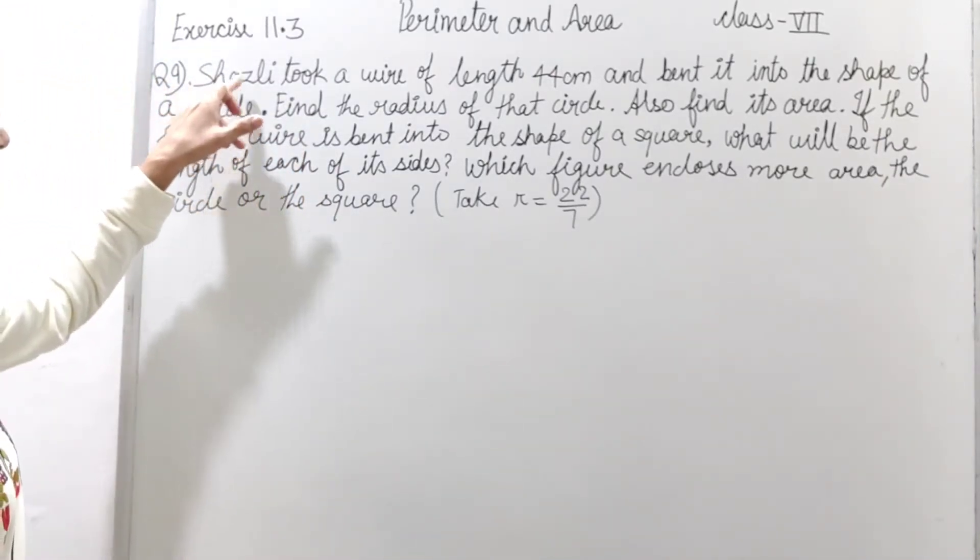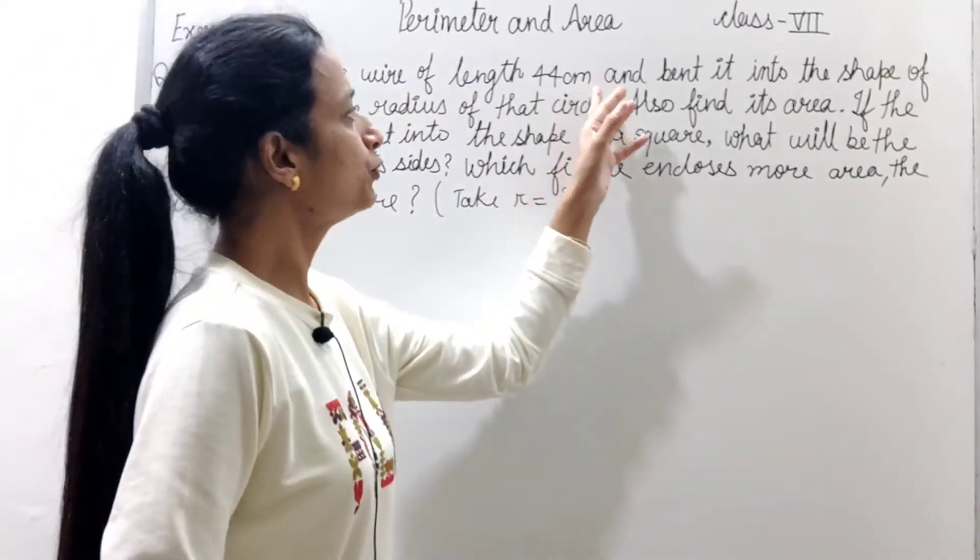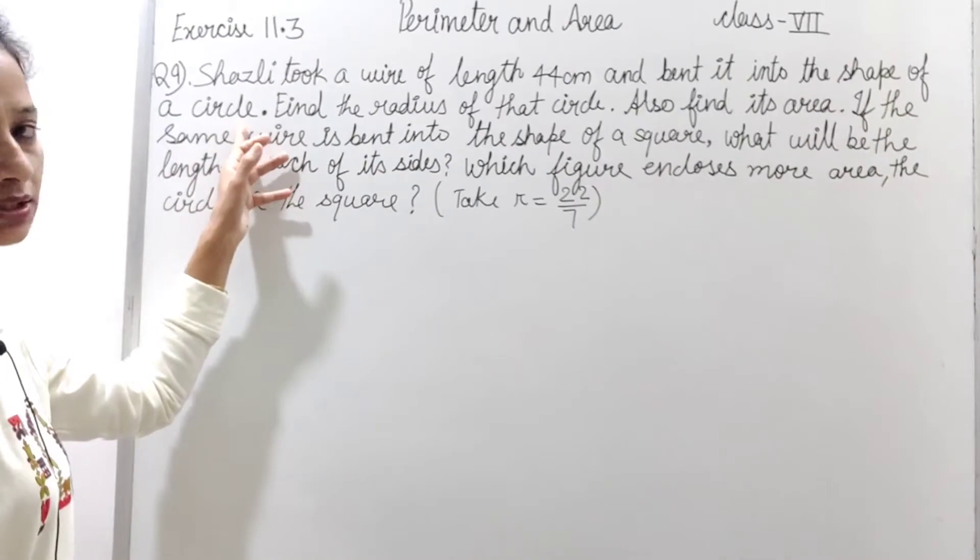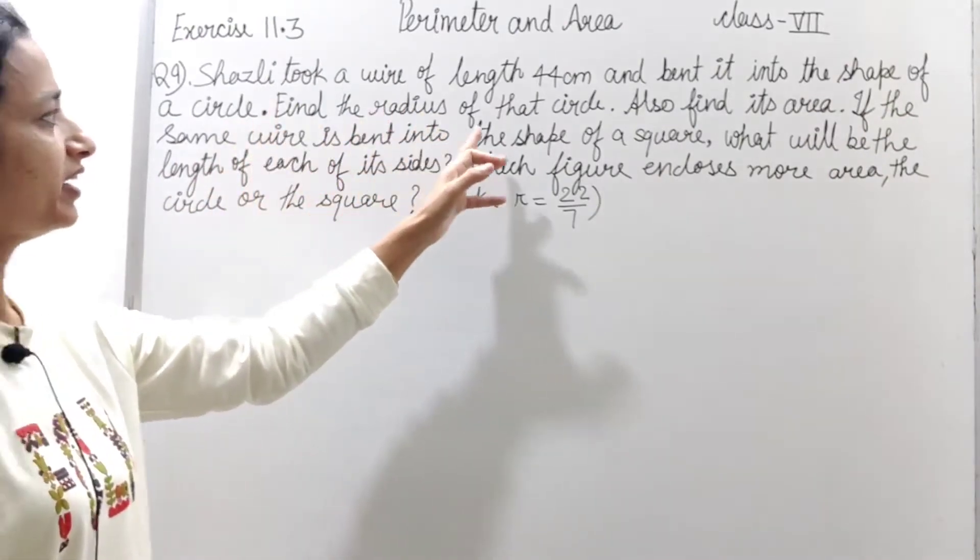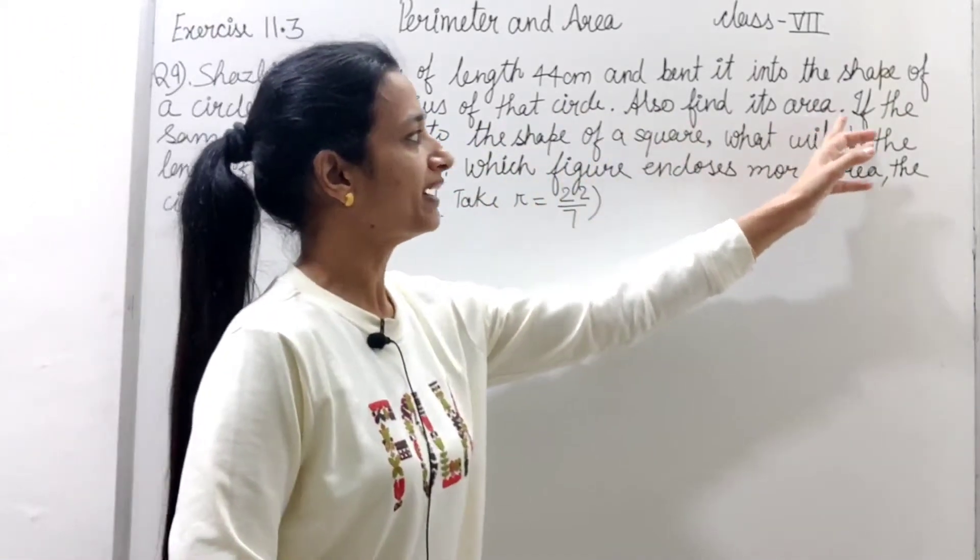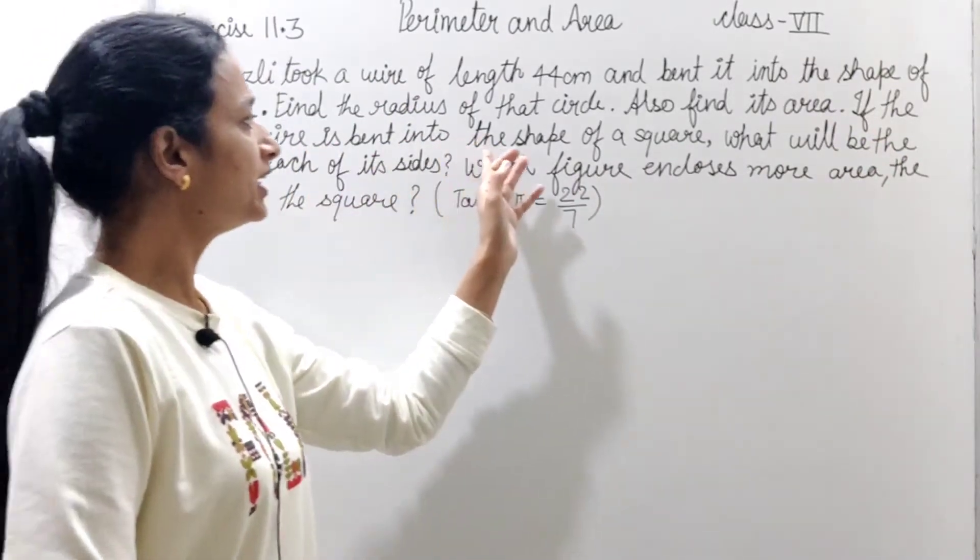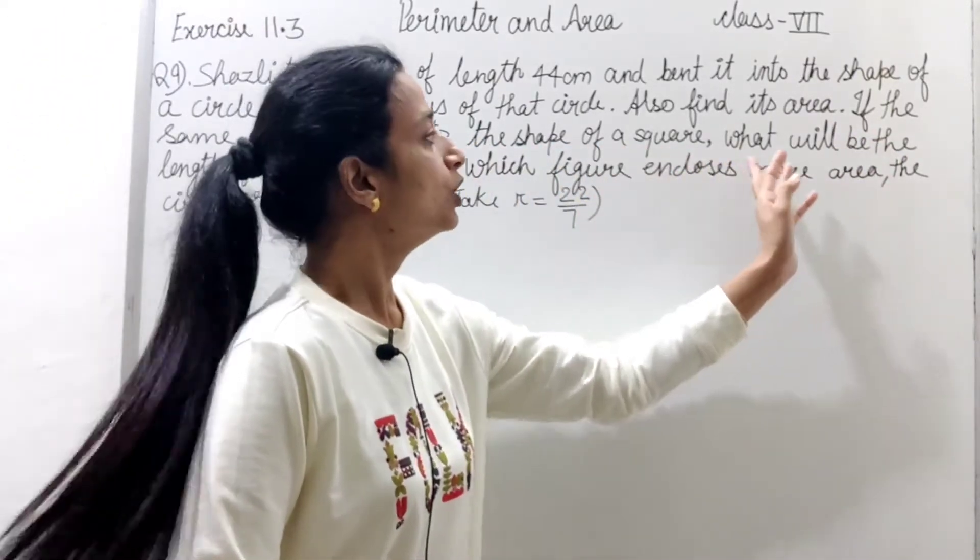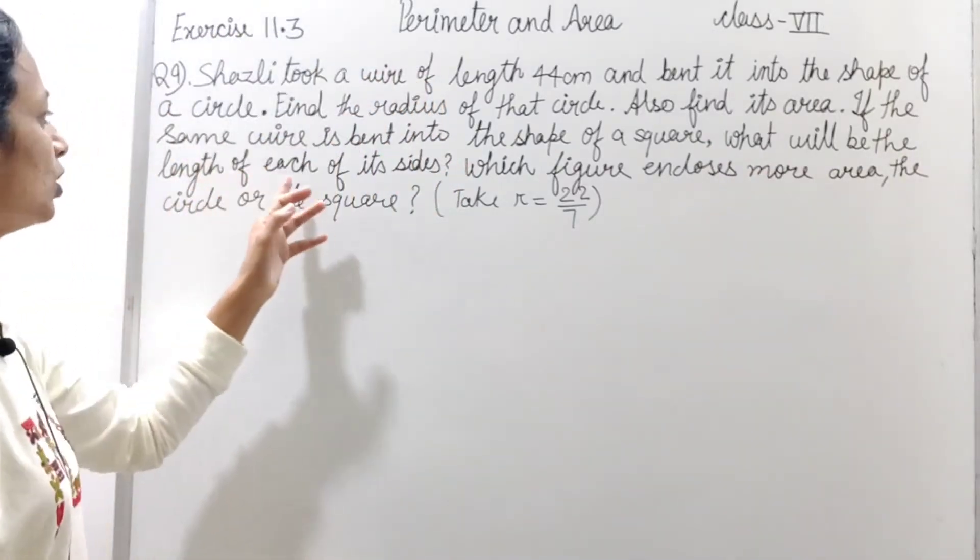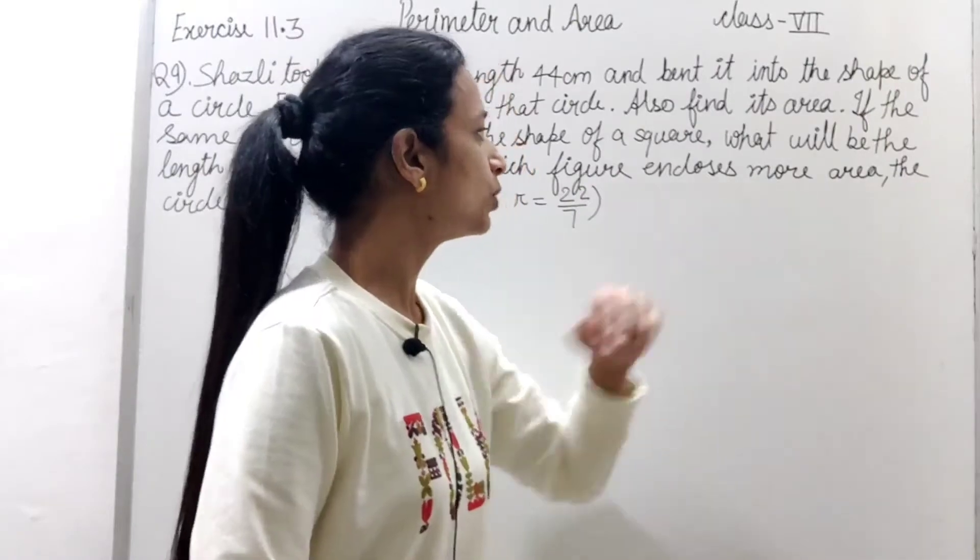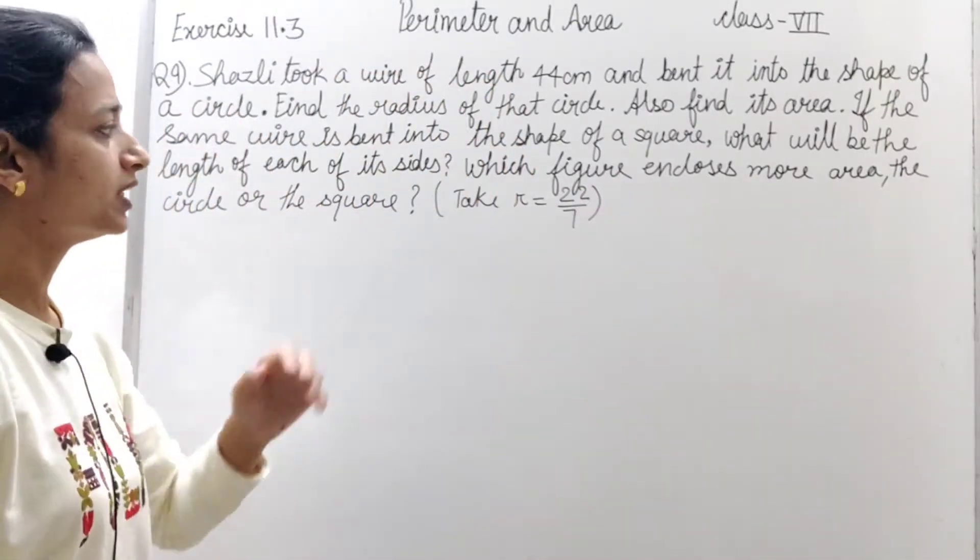Question hai: Shazal took a wire of length 44 cm and bent it into the shape of a circle. Find the radius of the circle, also find its area. If the same wire is bent into the shape of a square, what will be the length of each of its sides? Which figure encloses more area, the circle or the square?